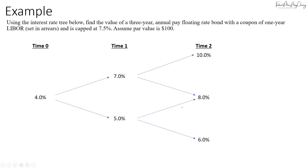Using the interest rate tree below, we are asked to find the value of a 3-year annual pay floating rate bond with a coupon of 1-year LIBOR set in arrears, capped at 7%, and a par value of $100. At maturity there will be a payment of par value which is $100.